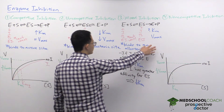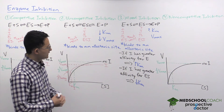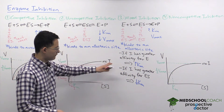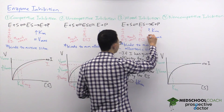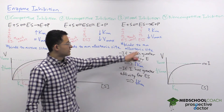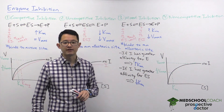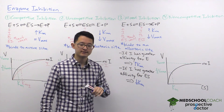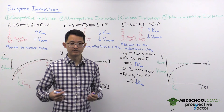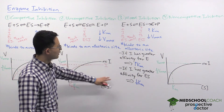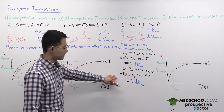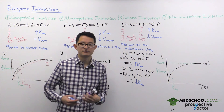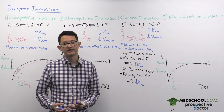For Vmax in mixed inhibition, we can make a definitive statement: Vmax decreases. Because the inhibitor can bind to the enzyme-substrate complex, no amount of added substrate can overcome the formation of the ESI complex, so the maximum reaction velocity must decrease. However, we cannot draw a single Michaelis-Menten saturation curve for mixed inhibition because of the variability in KM — it depends on the specific reaction, enzyme, and inhibitor being used.